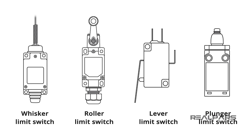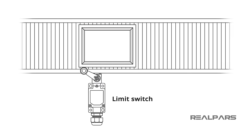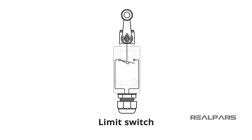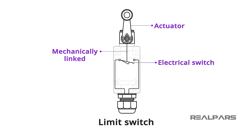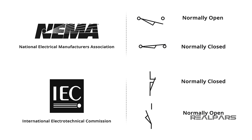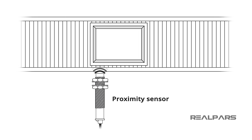Let's review what we've covered in this video. There are four general types of limit switches: whisker, roller, lever, and plunger. A limit switch is an electromechanical device operated by a physical force applied to it by an object, consisting of an actuator mechanically linked to an electrical switch. Limit switches are available in several switch configurations: normally open, normally closed, or one of each. Depending on the origin of the electrical schematic, you may see limit switches drawn in different ways. Limit switches are being replaced by proximity sensors in many applications.